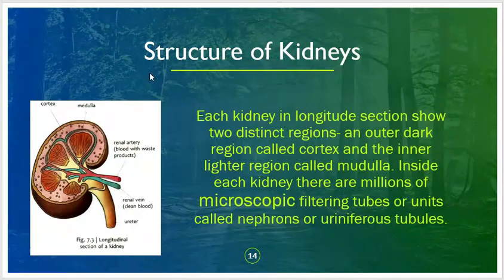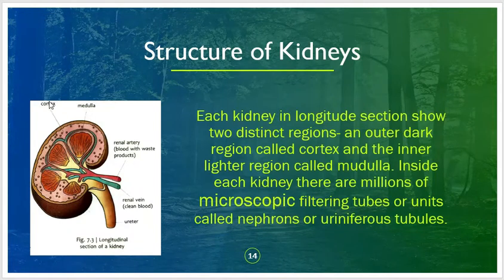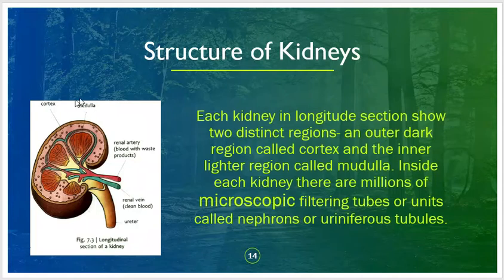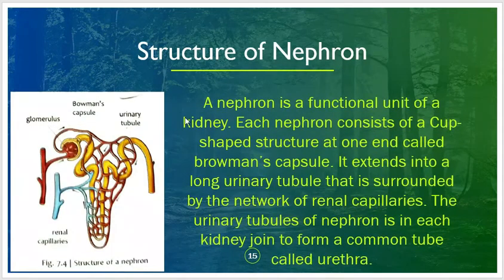Each kidney in longitudinal section shows two distinct regions: an outer dark region called the cortex, and an inner lighter region called the medulla. Inside each kidney there are millions of microscopic filtering tubes or units called nephrons, also known as uriniferous tubules.